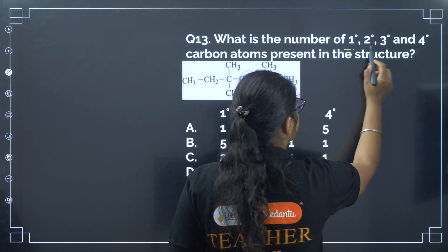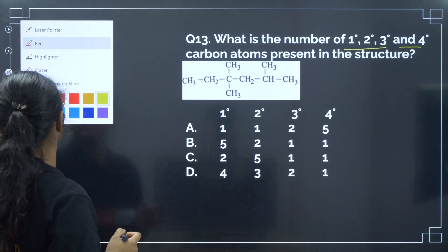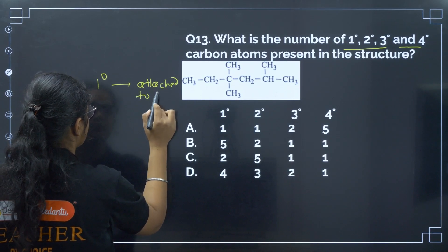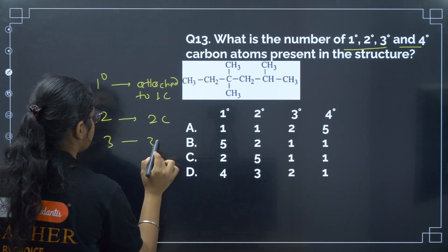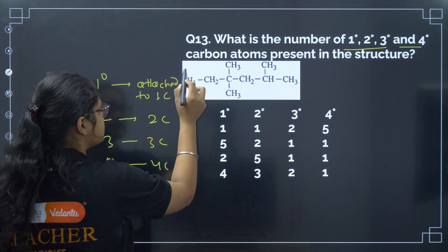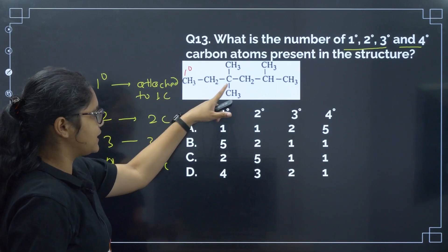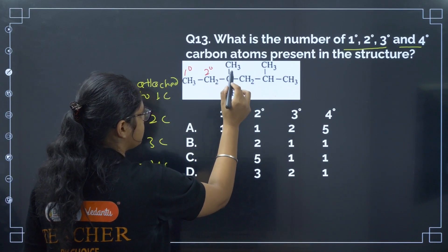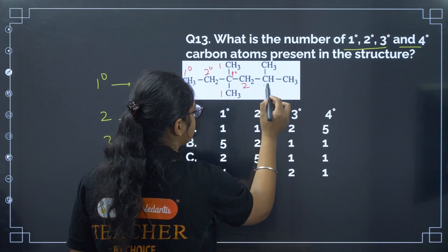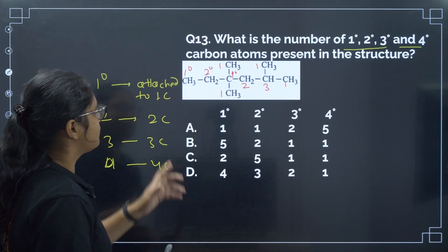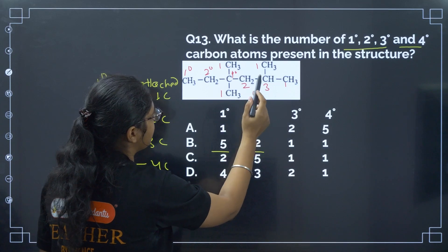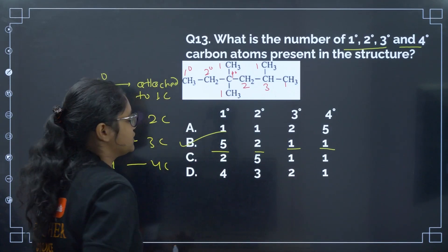Next: identify the number of primary, secondary, tertiary, and quaternary carbon atoms in the structure. Primary carbon is attached to 1 carbon, secondary to 2, tertiary to 3, quaternary to 4. Counting: five primary carbons, two secondary carbons, two tertiary carbons, and one quaternary carbon. Correct answer is option number B.